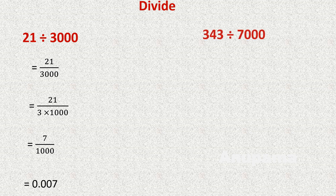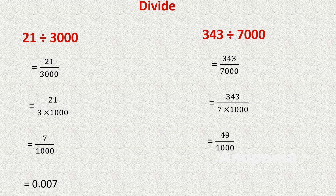One more question: 343 divided by 7000. We write it as a fraction: 343 over 7000, and rewrite 7000 as 7 multiplied by 1000. Dividing 343 by 7 gives 49, so we have 49 over 1000. Because there are three zeros in 1000, there will be three decimal places. The answer is 0.049.